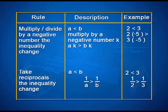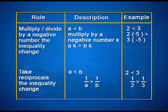The third rule states if we multiply or divide by a negative number, the inequality reverses. That is, if a is less than b and we multiply by a negative number k, then a into k is greater than b into k. For example, if 2 is less than 3, then 2 into minus 5, that is minus 10, is greater than 3 into minus 5, that is minus 15. So minus 10 is greater than minus 15.